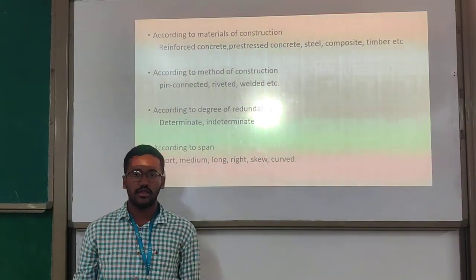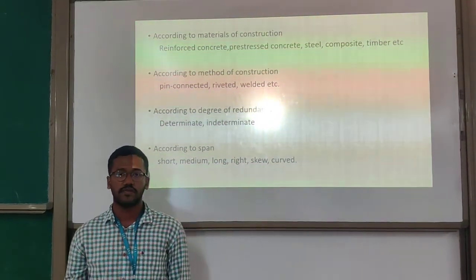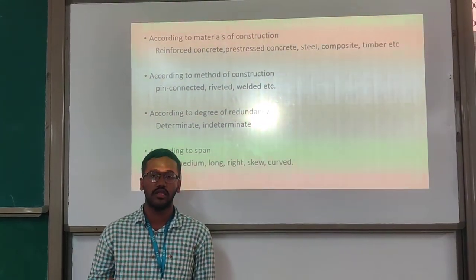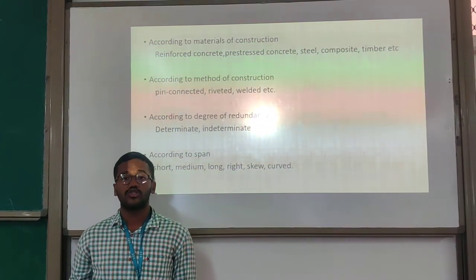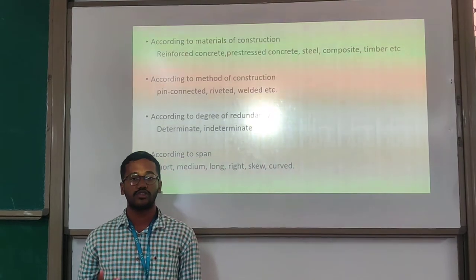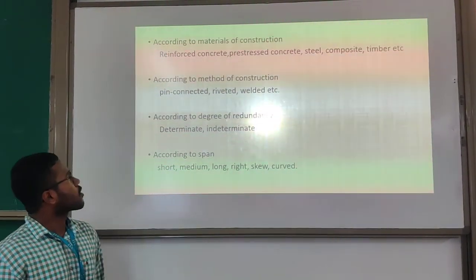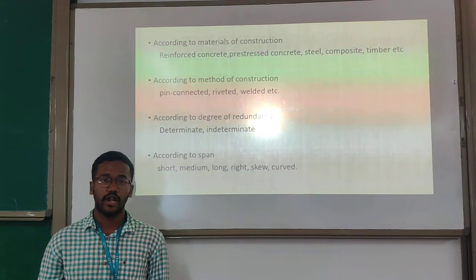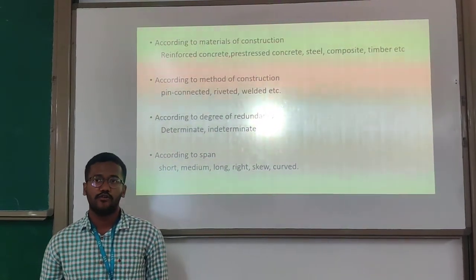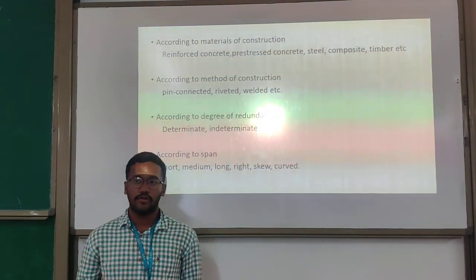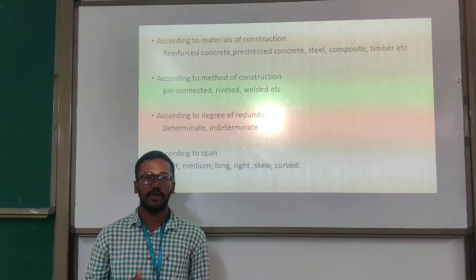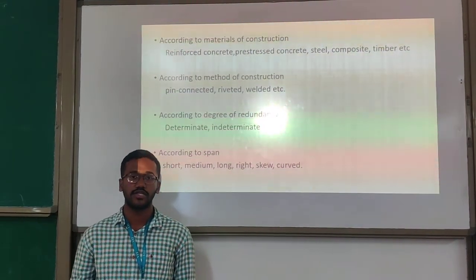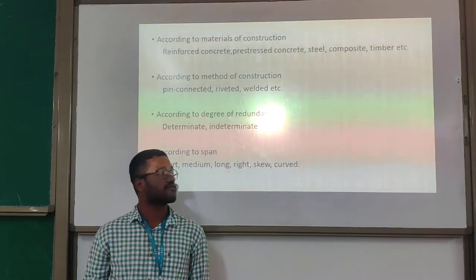According to the material of construction, bridges are generally constructed using prestressed concrete, along with reinforced concrete and steel. They can also be made of wood or a combination of various materials. According to the method of construction, connections can be welded, riveted, or bolted, depending on availability and requirements.